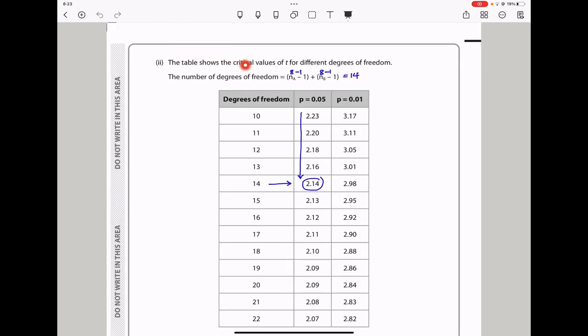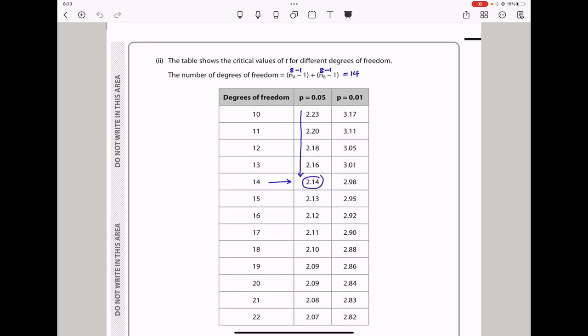Next they say the table shows the critical values of t for different degrees of freedom, and they also gave us how to calculate the number of degrees of freedom, which is going to be total, which is 8 minus 1, and for total for B was 8 minus 1, giving us 14. So the degrees of freedom are going to be 14, and in biology we get the results at p equals 0.05, so that and that correspond to give me a critical value of 2.14.